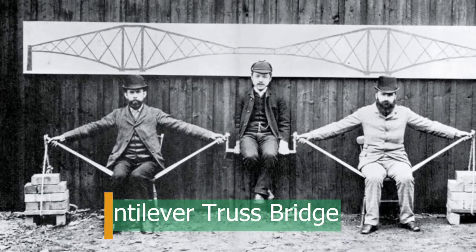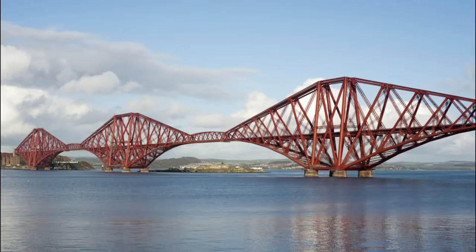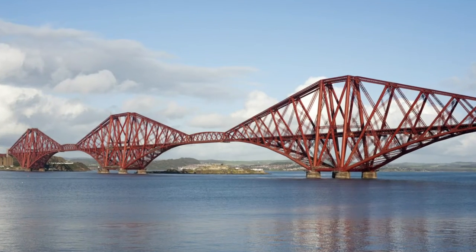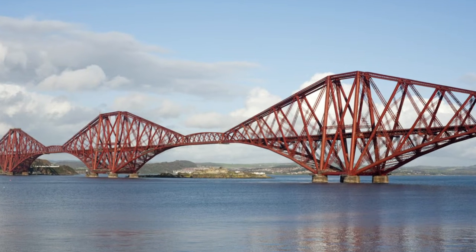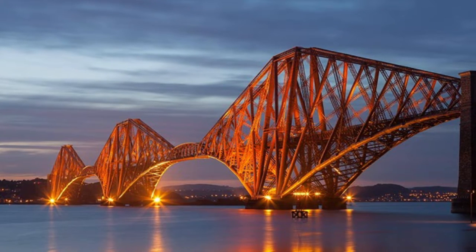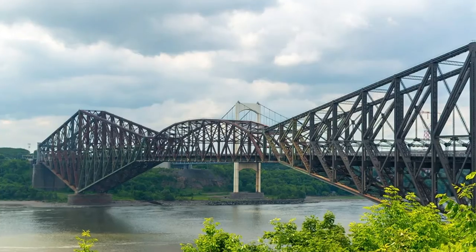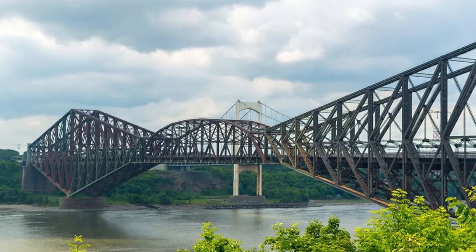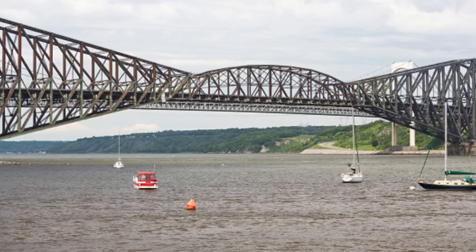Cantilever bridge. The cantilever action is taken into account when designing these types of bridges. The bridge acts as cantilevered from the support to spare loads of the mid-span. The components of cantilever bridges are anchor arm, cantilever arm, and suspended span. These bridges are constructed from structural steel sections such as universal beam sections, H sections, rectangular hollow sections, circular hollow sections, etc.